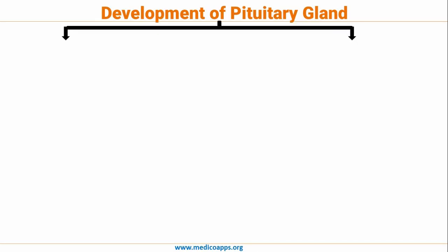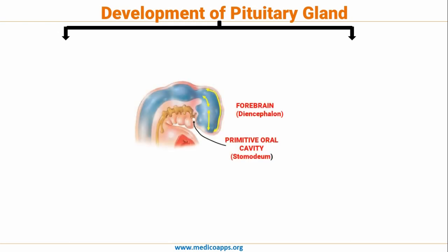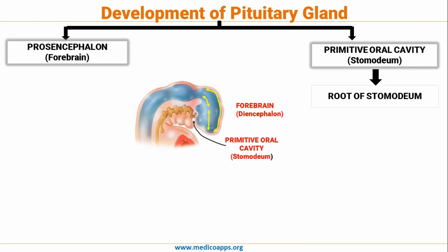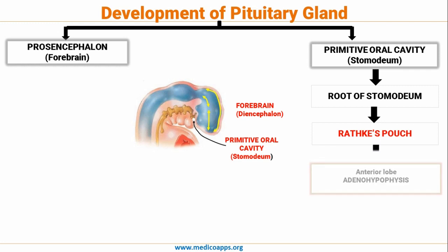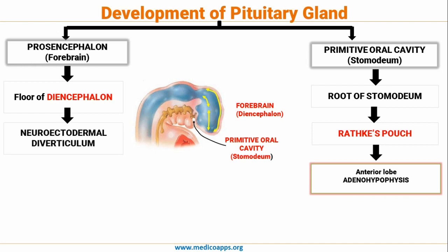The Pituitary Gland has an anterior part and a posterior part, and both develop from different parts. The Forebrain, that is the Diencephalon, and the Primitive Oral Cavity called the Stomodeum are involved. From the roof of the Stomodeum, we have the Rathke's Pouch, which gives rise to the anterior lobe or Adenohypophysis. From the floor of the Diencephalon, a Neuroectodermal Diverticulum forms, giving rise to the posterior lobe or Neurohypophysis.